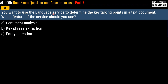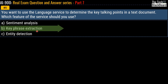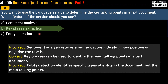Question 85: you want to use the language service to determine the key talking points in a text document — which feature should you use? Options are sentiment analysis, key phrase extraction, or entity detection. The correct answer is option B, key phrase extraction. Sentiment analysis returns a numeric score indicating how positive or negative text is. Key phrase extraction identifies the main talking points in a document. Entity detection identifies specific types of entities — not the main talking point — which is why it's not chosen.